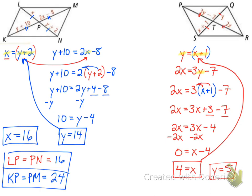Substituting back in to find the diagonal lengths: PT equals TR, and 2 times x is 2 times 4, which equals 8. For the other diagonal, ST equals TQ, which corresponds to y, so ST equals TQ equals 5.